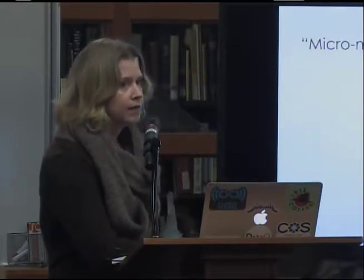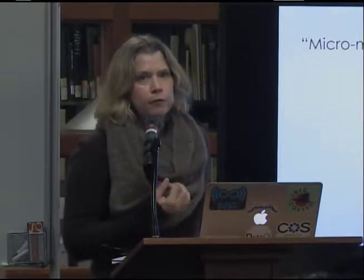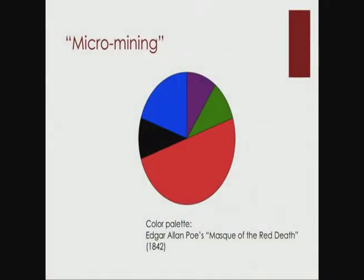You can do data mining on really small scales. I've been working on tools for close reading literary texts through a simple type of data mining — I wrote a simple program that goes through a text, counts up all the colors that appear, and spits out a color palette based on percentages. Here, nothing too surprising: this is Edgar Allan Poe's Mask of the Red Death, so red appears very frequently. But I've found interesting examples that have provoked further questions.